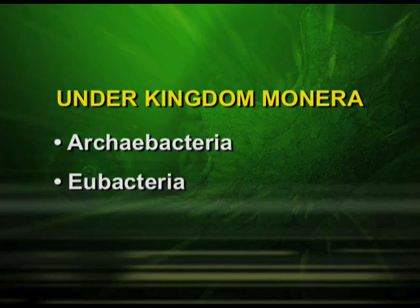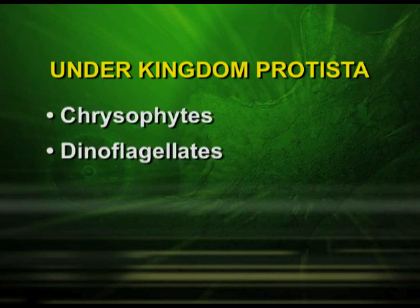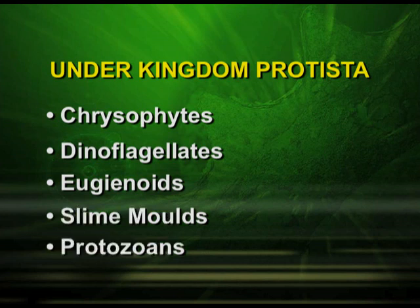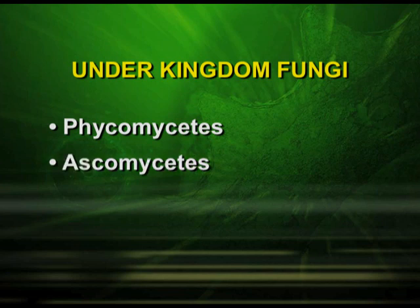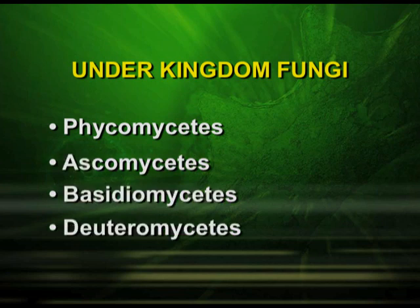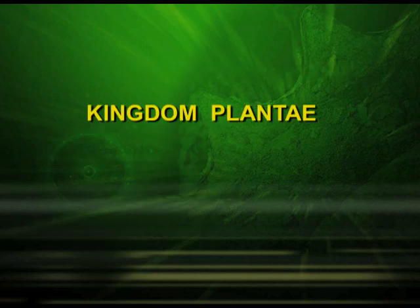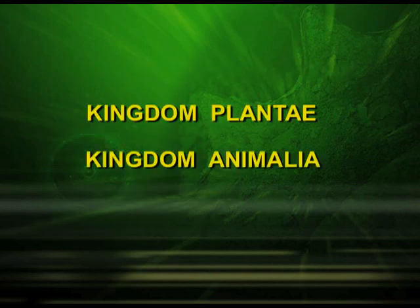Let us have a quick recap of the portions we studied. Kingdom Monera: Archaebacteria, Eubacteria. Under Kingdom Protista, we studied chrysophytes, dinoflagellates, euglenoids, slime molds, and protozoa. Under Kingdom Fungi: Phycomycetes, Ascomycetes, Basidiomycetes, Deuteromycetes. And the kingdoms Plantae and Animalia. We will continue with the same unit in the next episode.